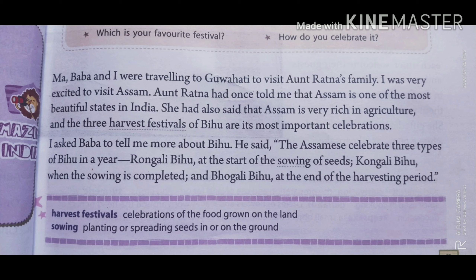Next paragraph. I asked Baba to tell me more about Bihu. He said that Assam celebrates three types of Bihu in a year: Rongali Bihu at the start of the sowing of seeds, Kongali Bihu when the sowing is completed, and Bhogali Bihu at the end of the harvesting period.